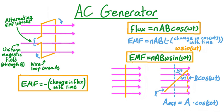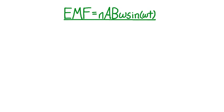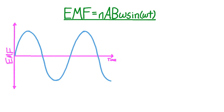This gives us our final expression for the alternating electromotive force produced by an AC generator: EMF equals N, the number of wire loops, times A, the area of each loop, times B, the strength of the magnetic field, times omega, the speed of rotation of the loops, times sine of omega t. Now let's use this formula to understand some qualitative properties of this alternating EMF. The graph of EMF with respect to time has a sinusoidal shape due to the sine omega t term. Since the sine function varies between positive 1 and negative 1, the extreme values for the EMF are given by the constant N·A·B·omega.